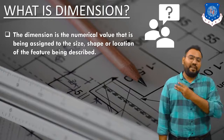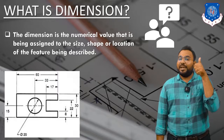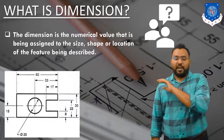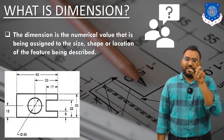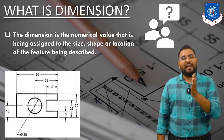We will understand these three things with one example. You can see a figure on screen with various dimensions written: 20, 15, 60, 33, 17, 8, 22, 30. These are all dimensions assigned to this particular figure. You can also see a circle in the figure, and the diameter of that circle is shown by a small line with the symbol Ø followed by 20.